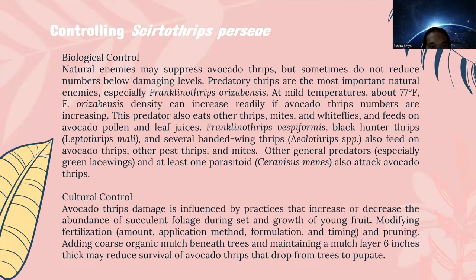Franklinothrips vespiformis, blackhunter thrips, Leptothrips mali, and several banded-wing thrips, Aeolothrips spp., also feed on avocado thrips. Other general predators, especially green lacewings, and parasitoids such as Ceranisus menes, also attack avocado thrips. For cultural control, avocado thrips damage is influenced by factors affecting succulent foliage during fruit set and growth. Modifying fertilization, application method, formulation, and timing, along with pruning, and adding coarse organic mulch beneath trees maintaining a 6-inch mulch layer, may reduce survival of avocado thrips that drop from trees to pupate.